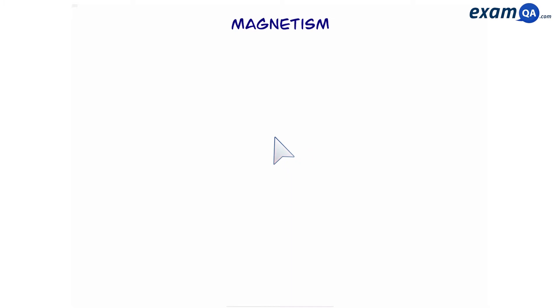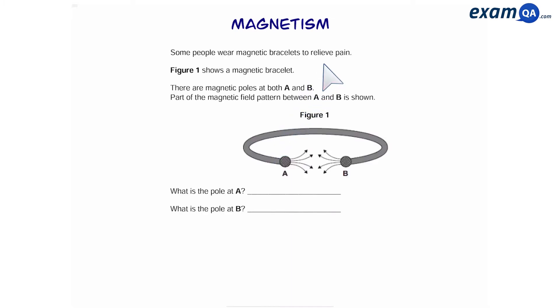Here's another exam style question on magnetism. Some people wear magnetic bracelets to relieve pain. In this figure, we can see a magnetic bracelet and poles A and B have been identified. However, we want to know if those are north poles or south poles. Whenever you have a magnet, the magnetic fields always point away from the north pole and into the south pole. Based on this, let's look at A first. We can see that those arrows which are representing magnetic fields are pointing away, so that means A must be a north pole. Now looking at B, we can see the arrows are pointing away, so B is also another north pole.